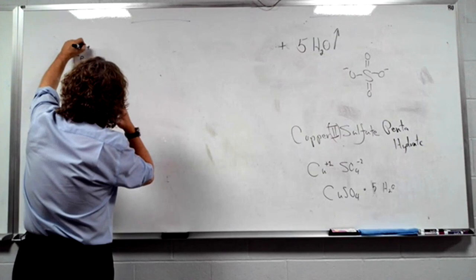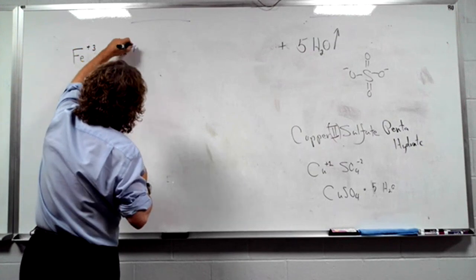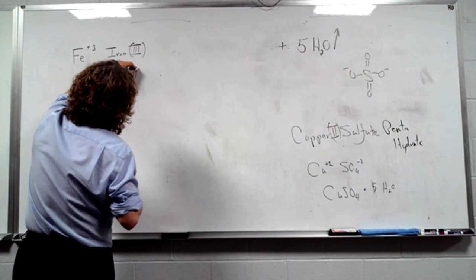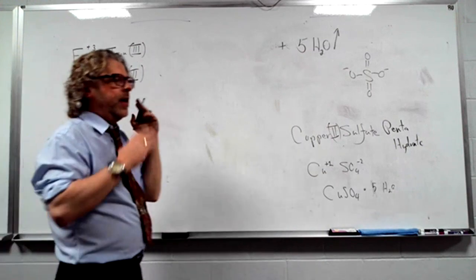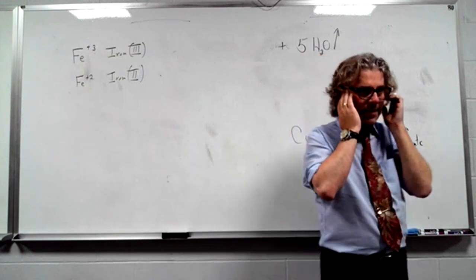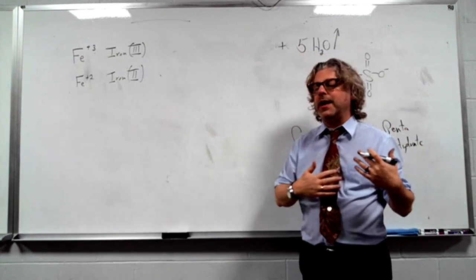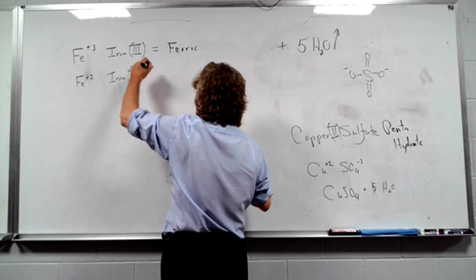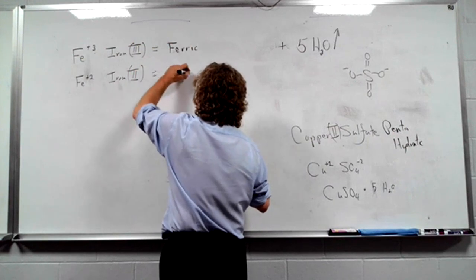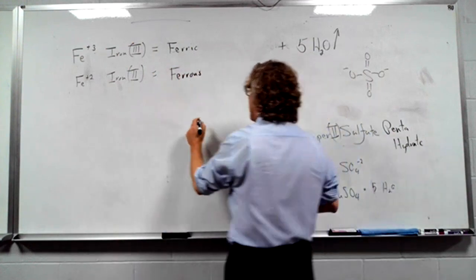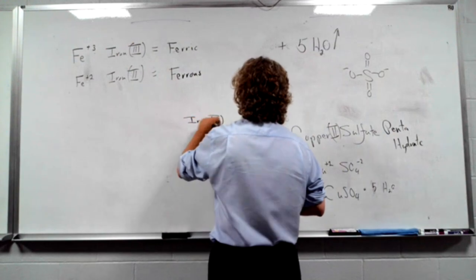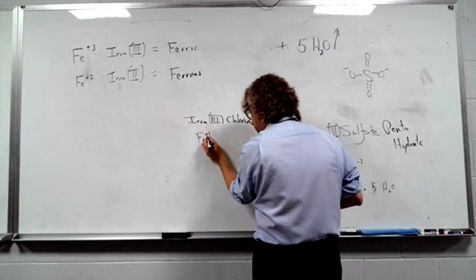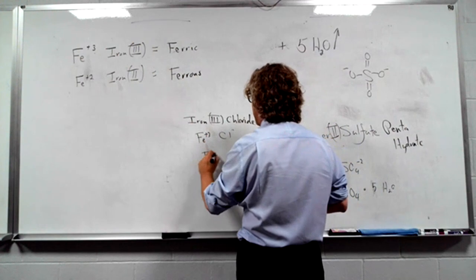Fe+3 is iron 3. Fe+2 is iron 2. Iron is not something that starts with an F and an E — it comes from another language. So in the old days, Fe+3 was called the ferric ion, and Fe+2 was called the ferrous ion. If I had iron(III) chloride — I write Fe+3, the Roman numeral tells me the charge of the iron, then I write Cl minus 1, cross it down: FeCl3.